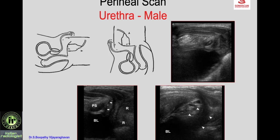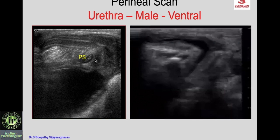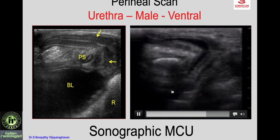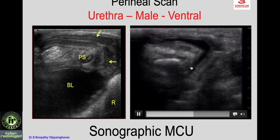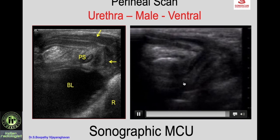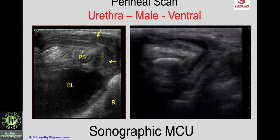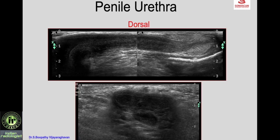For perineal scan of the urethra in a male, the probe is placed at the perineum. The image shows the pubic symphysis, bladder, the posterior and anterior urethra. In a child and adult you see the pubic symphysis, bladder, rectum, the posterior and penile urethra marked in the image. You can perform a sonographic micturating cystourethrogram, seeing the bladder contracting and the urethra distended with urine — useful in diagnosis of posterior and anterior urethral valves.